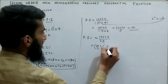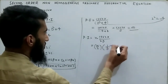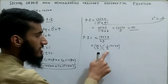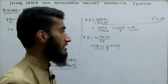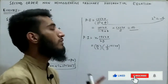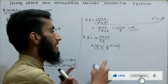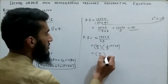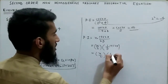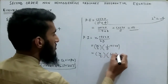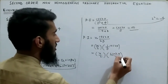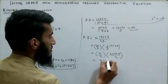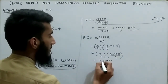Here, D alone in the denominator means we integrate the function. So it becomes x/2 times the integral of cos(2x), which is sin(2x)/2. This simplifies to x·sin(2x) divided by 4.